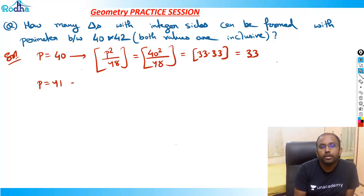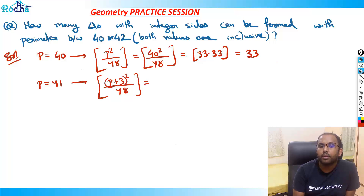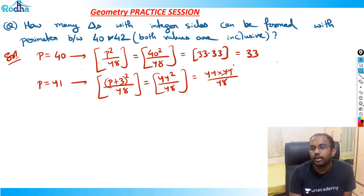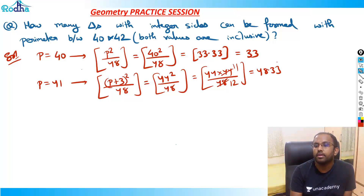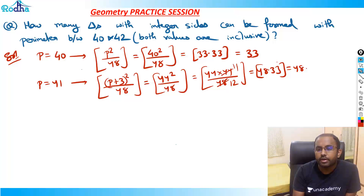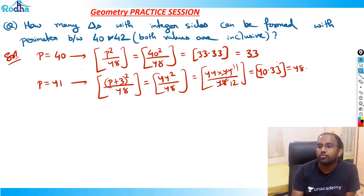When P = 41, it is an odd number, so the total number of triangles is (P + 3)² / 48. P + 3 = 44, so 44² / 48 = 44 × 44 / 48 = 1936 / 48 = 40.33, which gives 40.